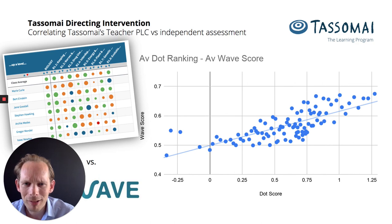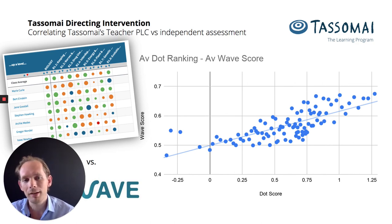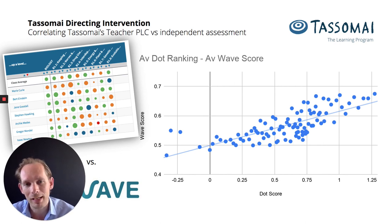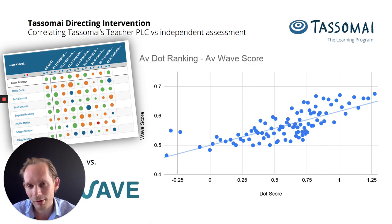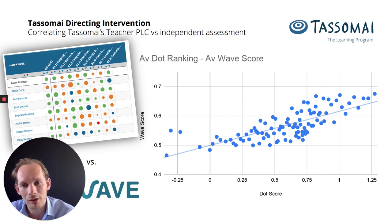The blue dots — where students averaged 60 to 70% — compared to the orange dots — where they averaged 50 to 60%. They are averages, of course, and there's noise in the data. But it's a very strong indicator that our dots are good as a data source for indicating likelihood of outcome and directing intervention.